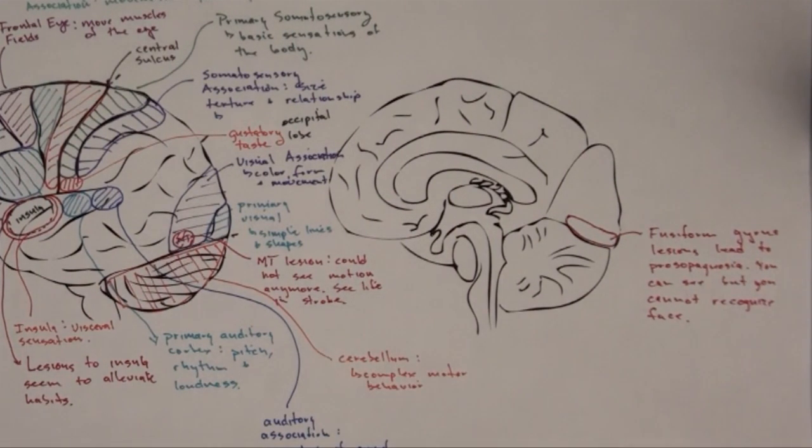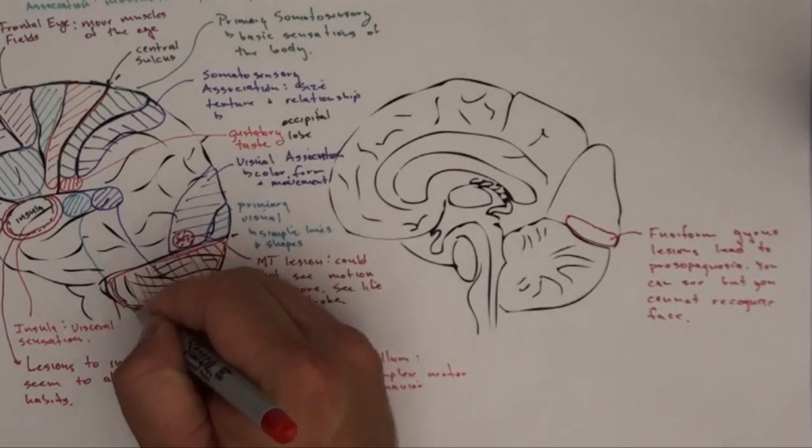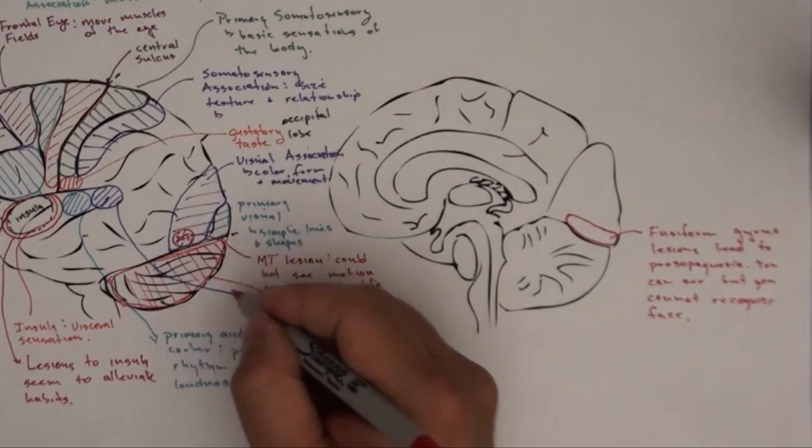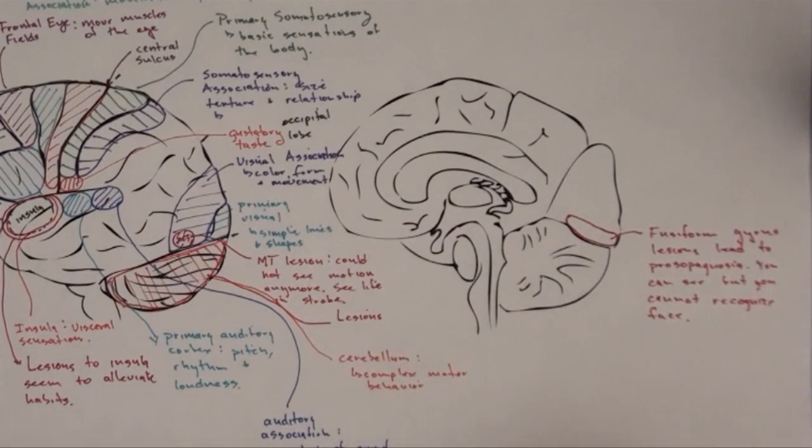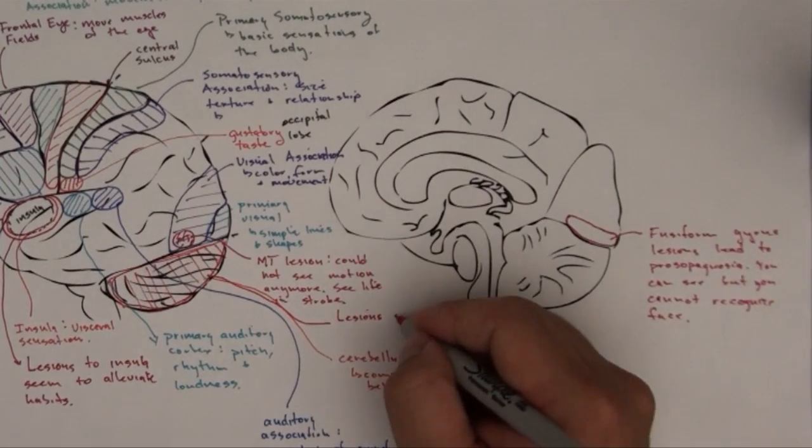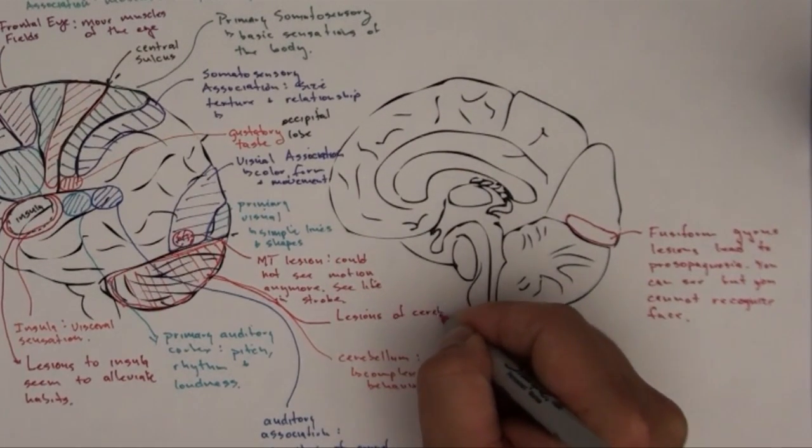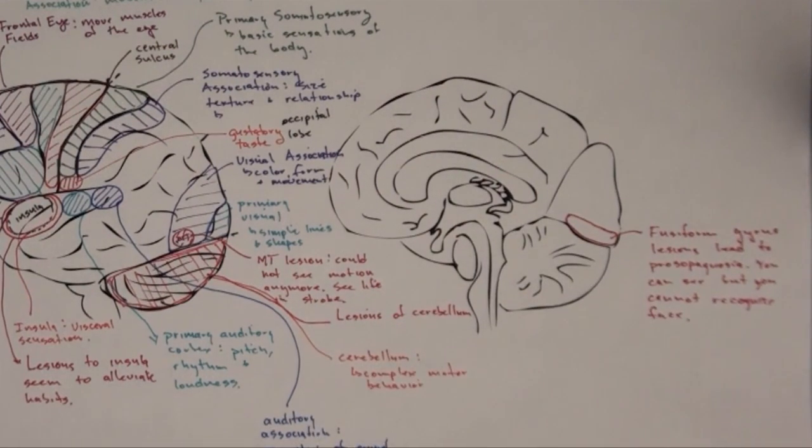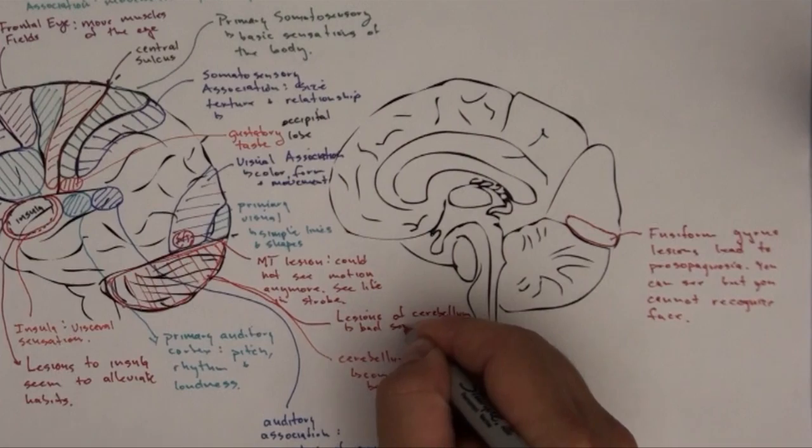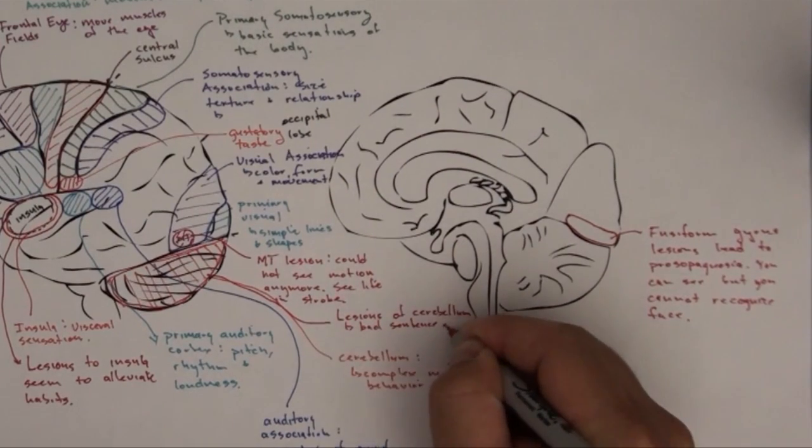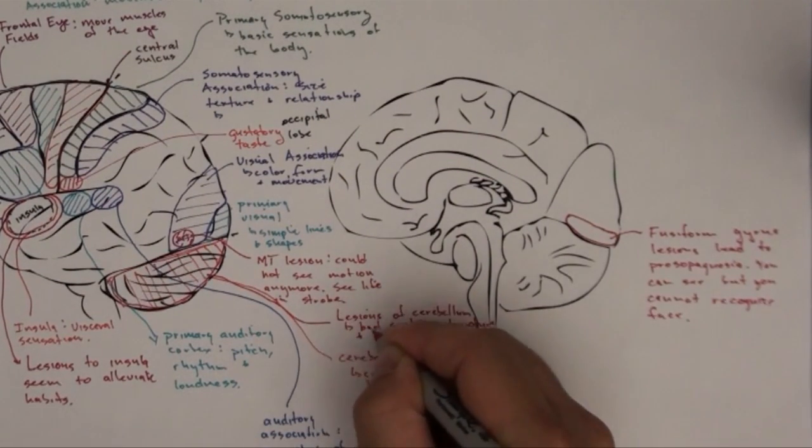We'll put the next part of this on a lesion. Lesions of cerebellum suggest that it's more than just motor behavior, because patients with lesions of the cerebellum got bad at things like chess. They got bad at sequencing things. They got bad at sentence structure.